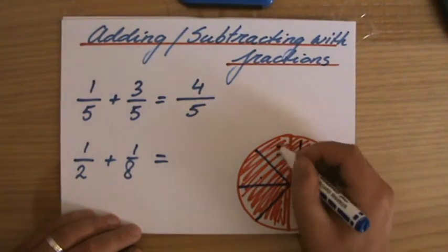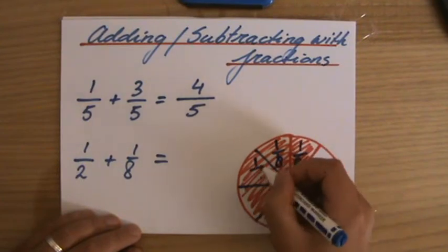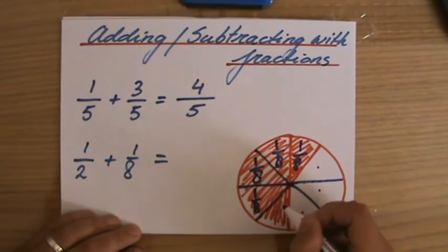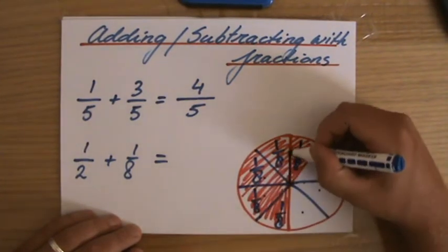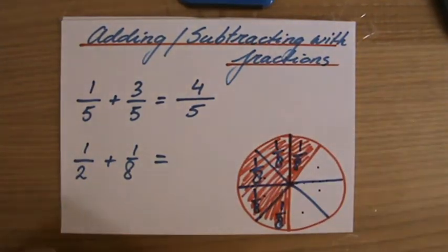So, how many of those slices did I eat? I had 1 of those. Another one. Another one. Another one. And another one. I had 1, 2, 3, 4, 5 of those slices. I had 5 eighths of my pizza. And why is that?